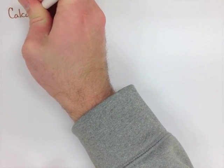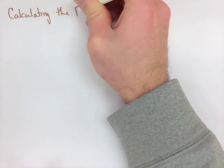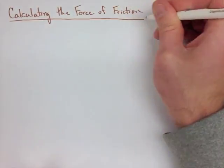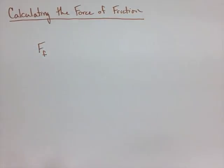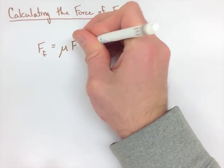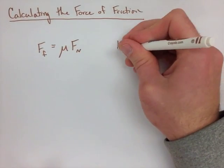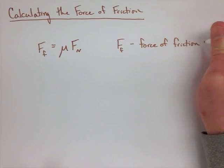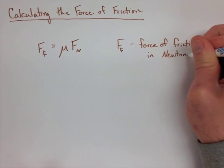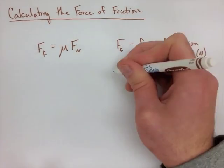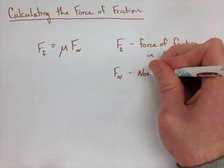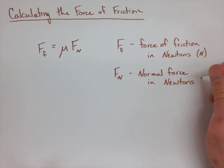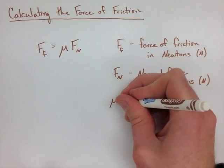Now we're going to look at how to calculate the force of friction on an object. When we're looking at this, we have to keep in mind that there's going to be two objects in question, the object that's being moved and the object that it's moving against. We use force of friction equals mu force normal, or mu times the normal force, where FF is the force of friction in Newtons, FN is the normal force also in Newtons.